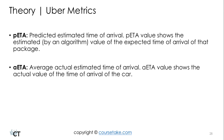Finally, you've got two other metrics: PETA and AETA. PETA stands for Predicted Estimated Time of Arrival — it shows the estimated, algorithmic value of the expected time of arrival of a car. AETA stands for Average Actual Estimated Time of Arrival, and shows the actual value of the time of arrival of the car. Keep all these metrics in mind because they're going to be super useful when we answer the multiple choice questions later on in the course.